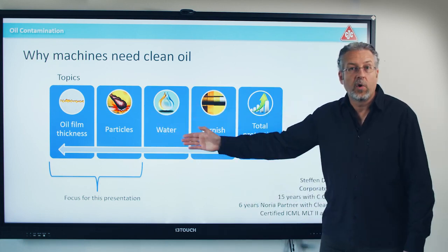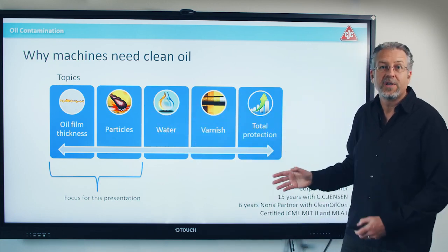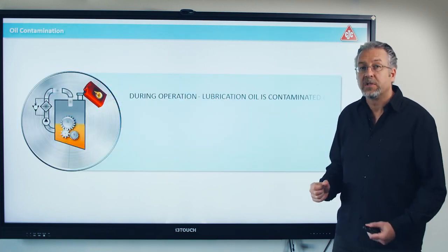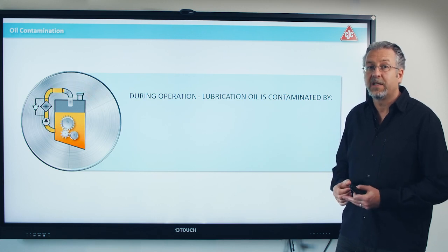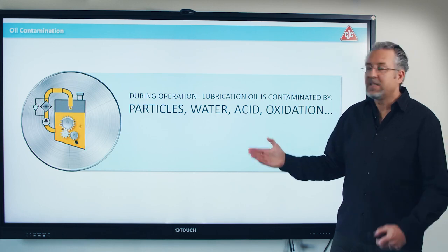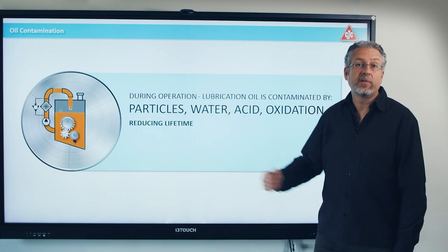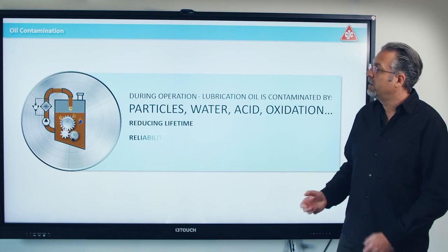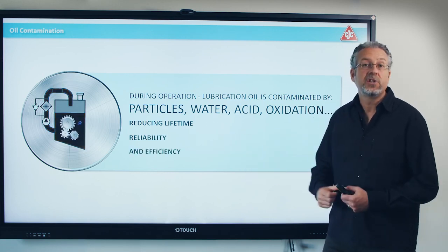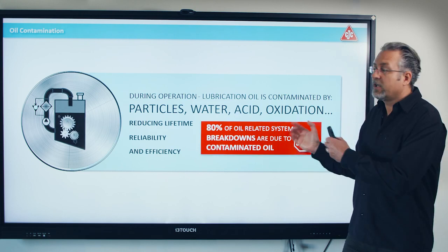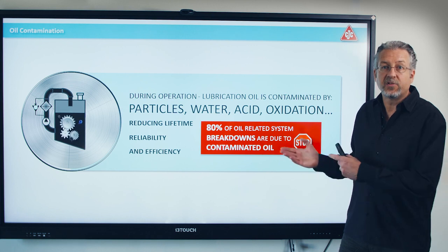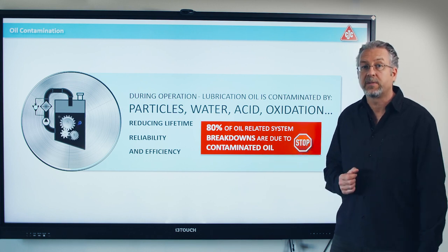Of course, there's also water and varnish and other issues, but there will be another session. When you have a machine in operation, any machine will be contaminated by particles, water, oxidation, and acidity. That means the lifetime of the machine will be reduced, and the oil will also harm the reliability and the efficiency of the machine. Studies have shown that 80% of failures related to oil are actually because of contamination in the oil.